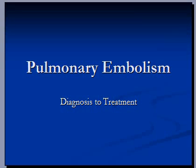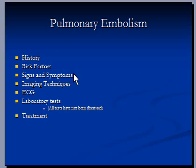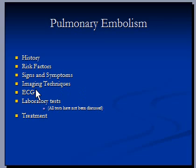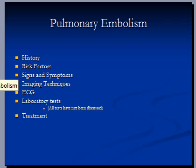Hello, once again. I would like to finish the topic of pulmonary embolism with the help of this video. We now know what pulmonary embolism is, what the history is like, what the risk factors are, what the signs and symptoms are, and what imaging techniques include - chest X-ray, CT pulmonary angiography, ventilation and perfusion scan, and ultrasound of legs to investigate or confirm DVT. We know what the S1Q3T3 pattern is on ECG and what it may mean. We have discussed arterial blood gases. Now we would like to discuss treatment once we have confirmed the presence of pulmonary embolism.